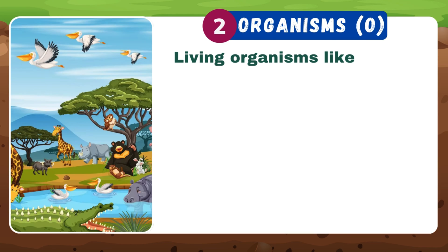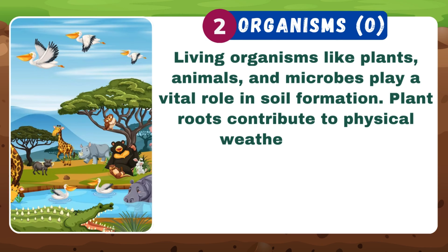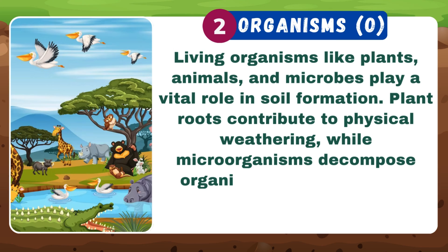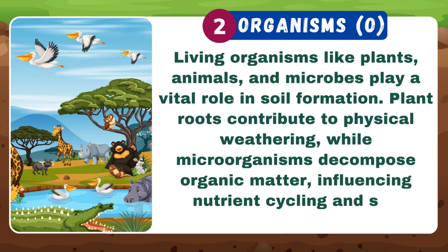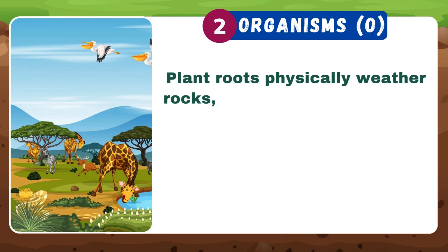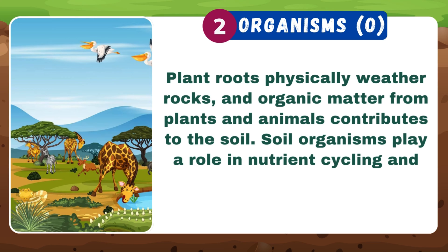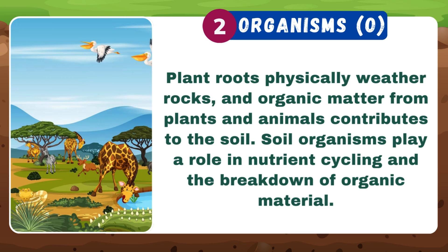Living organisms — including plants, animals, and microbes — play a vital role in soil formation. Plant roots contribute to physical weathering, while microorganisms decompose organic matter, influencing nutrient cycling and soil structure. Organic matter from plants and animals also contributes to the soil, and soil organisms play a key role in nutrient cycling and the breakdown of organic material.